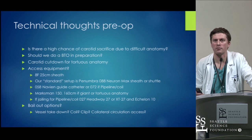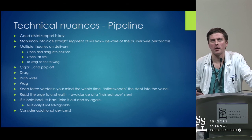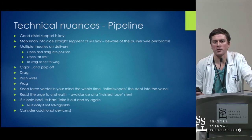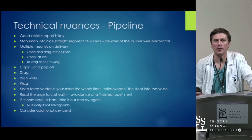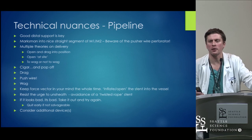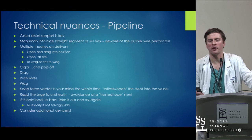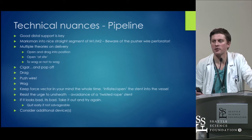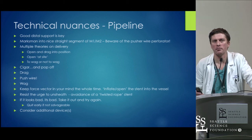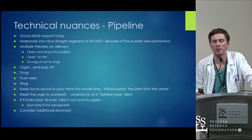Good distal support is key. We want to get the microcatheter to a nice straight segment. There are different techniques: do we open the stent and drag it back to where it needs to be and then fully deploy it? Do we open it where it should be situated and push it out exactly where we want it? Should we wag the wire to move around the stent and inflate it into the vessel? Essentially we make a little cigar, drag the catheter back, and then push out the stent.